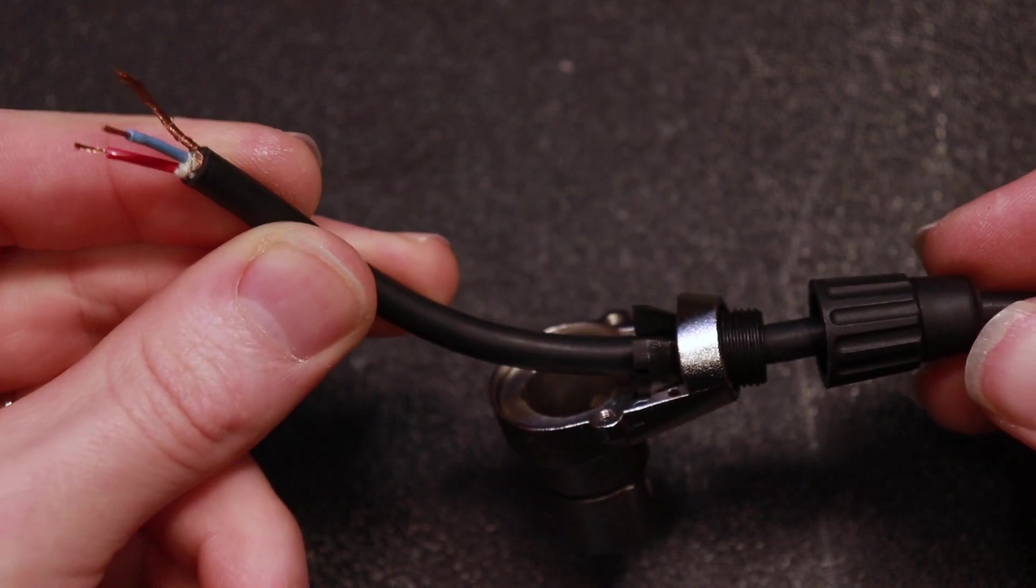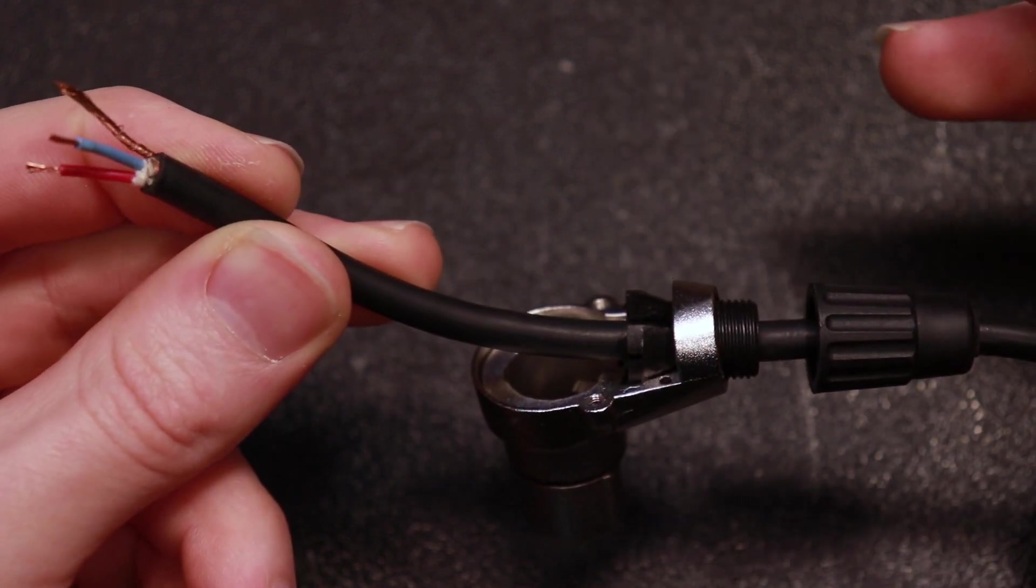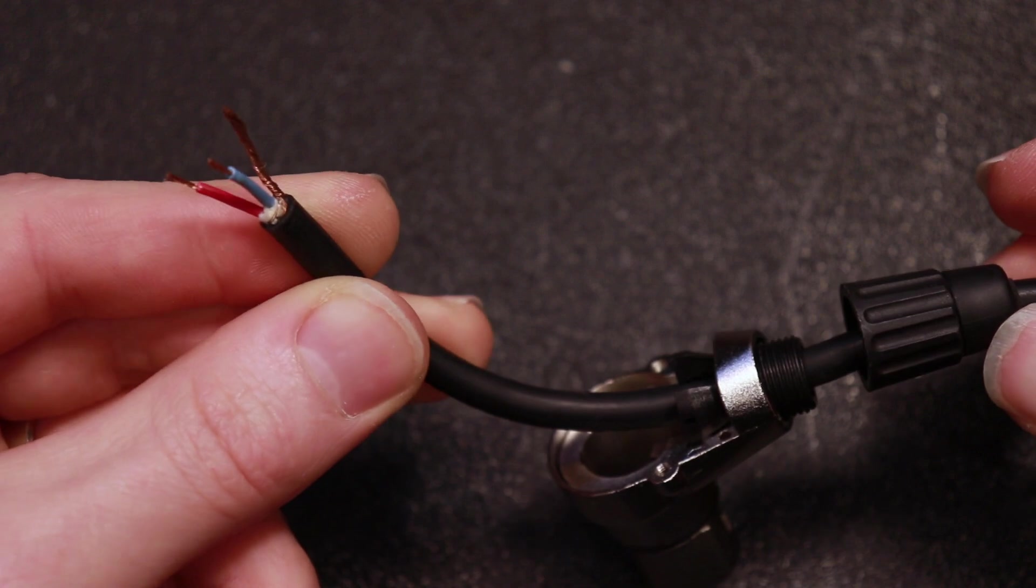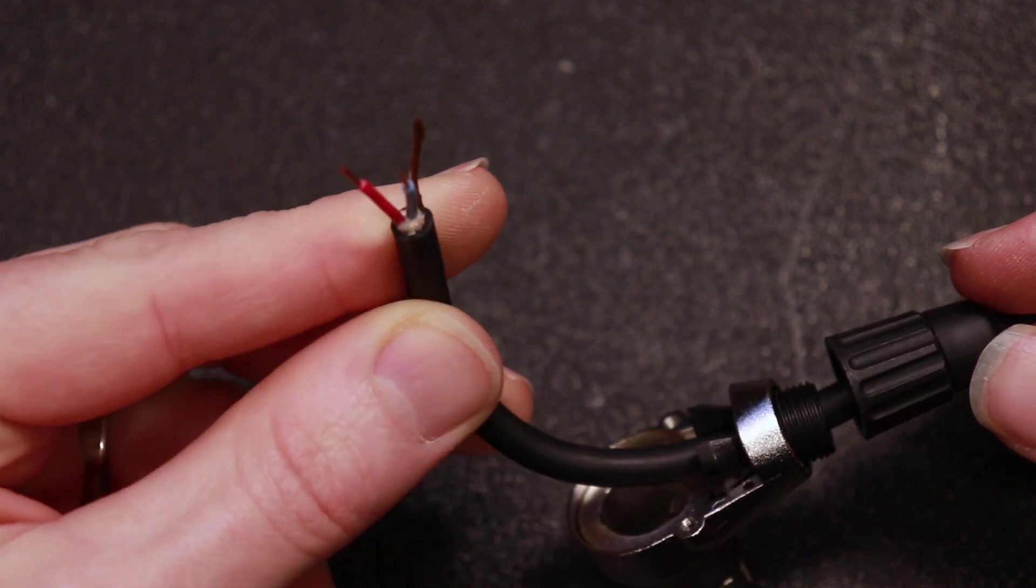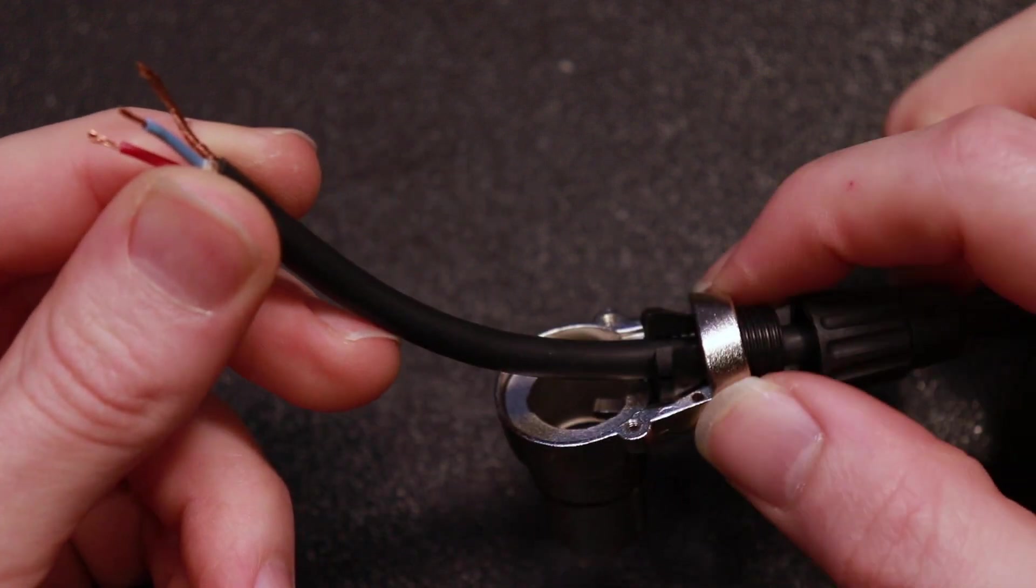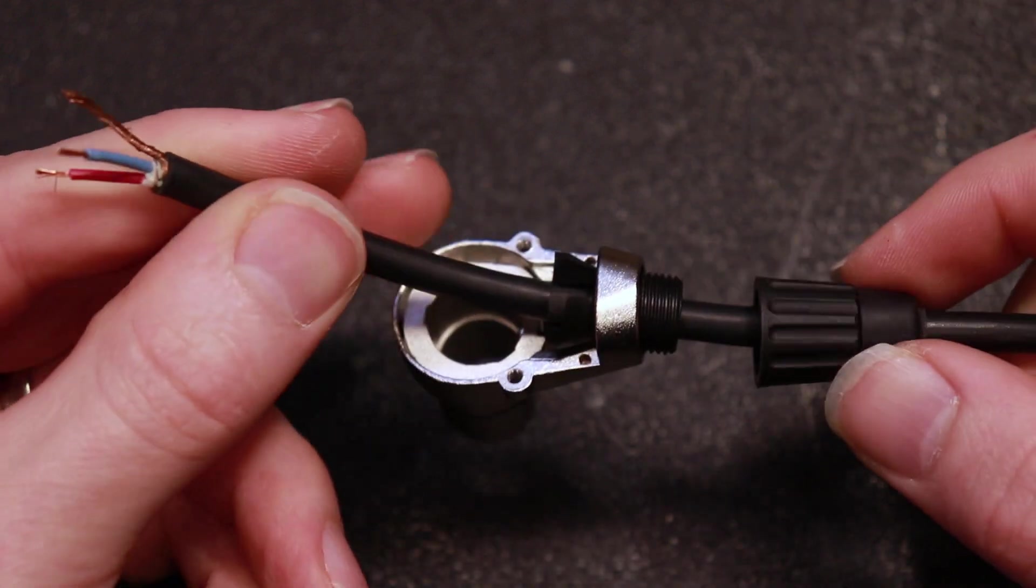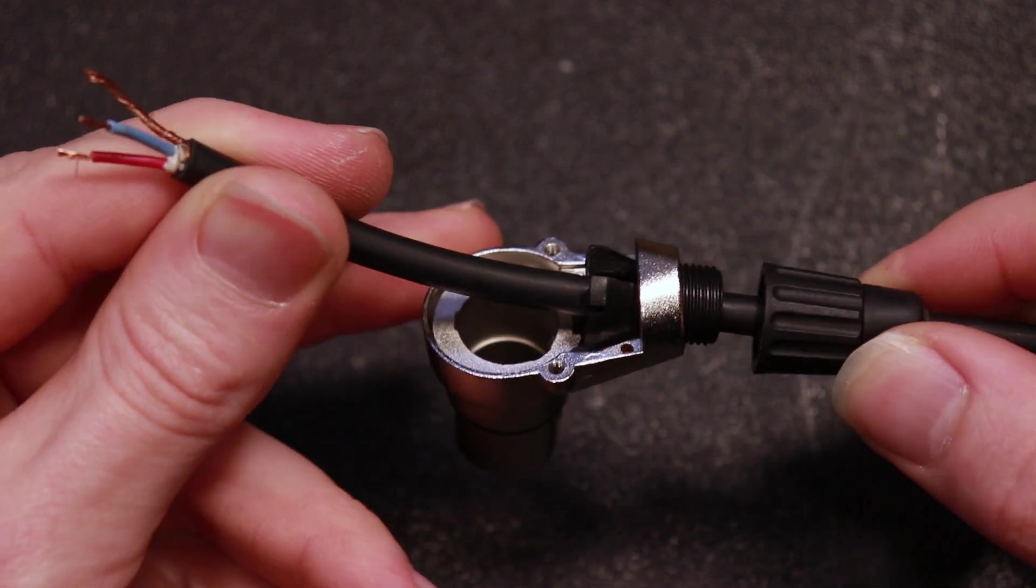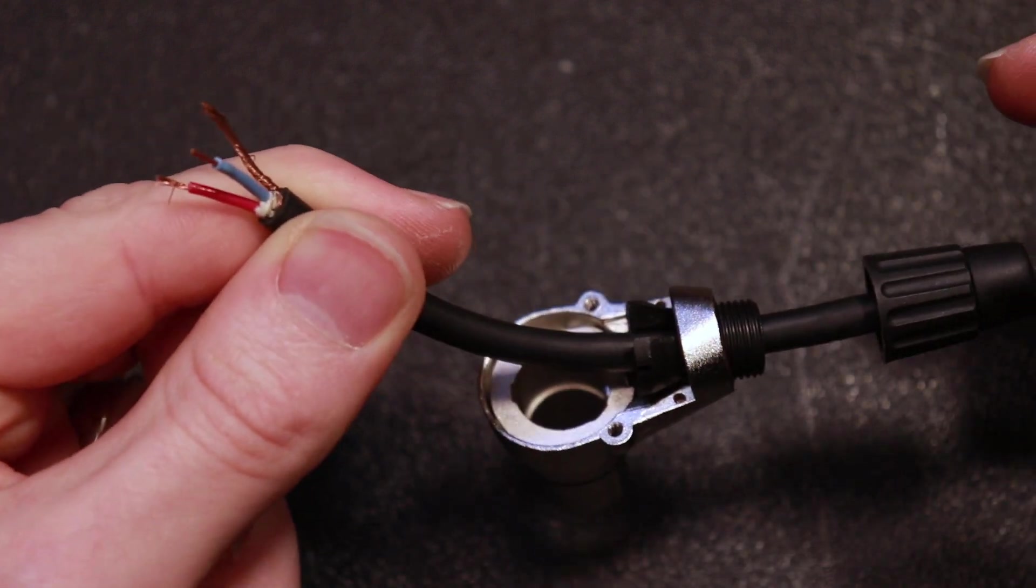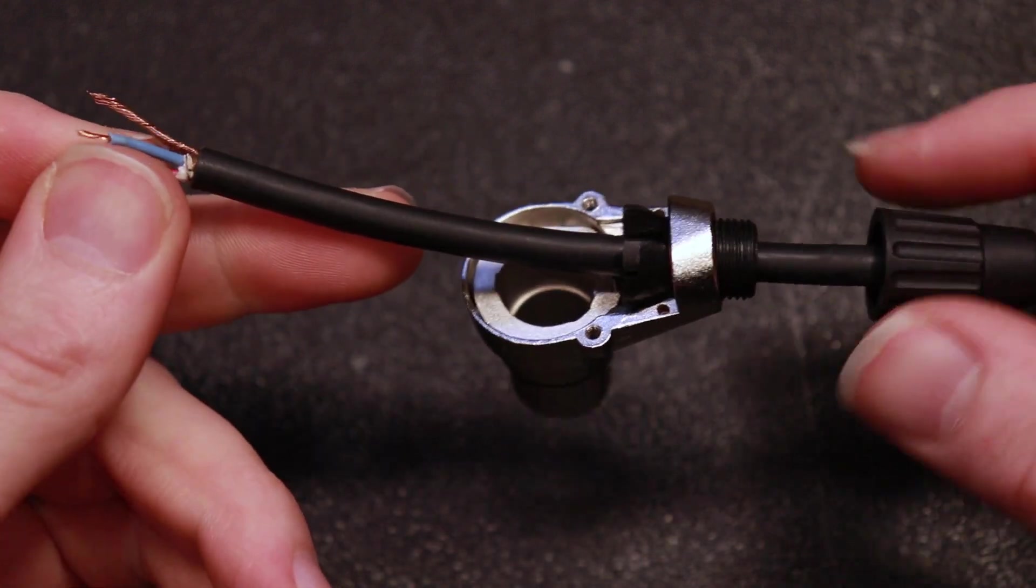Now you want to make sure before you get too far that you have everything assembled in the right order so we don't want to solder that inner core on the end here and realize, shoot, we can't slide on this strain relief and this cap back here. So just take a second and make sure you've got all these things on in the right order because otherwise you'll have to unsolder these ends.